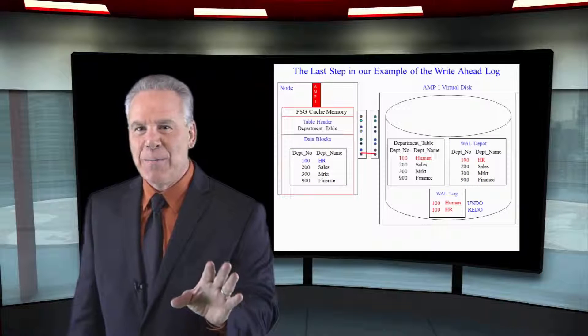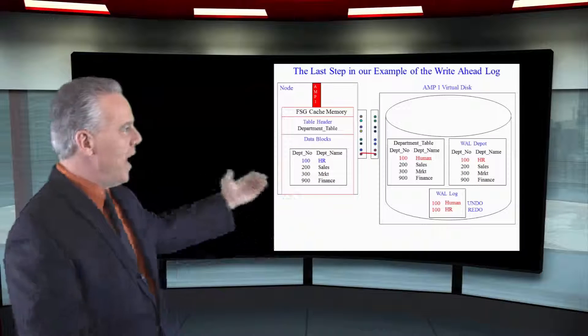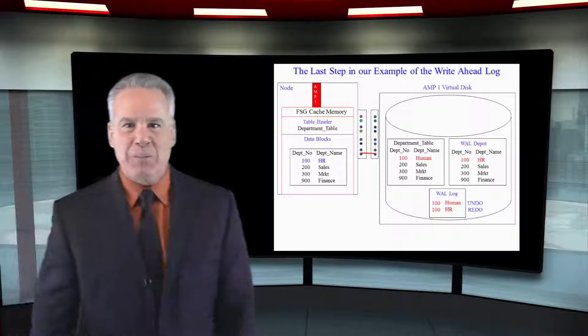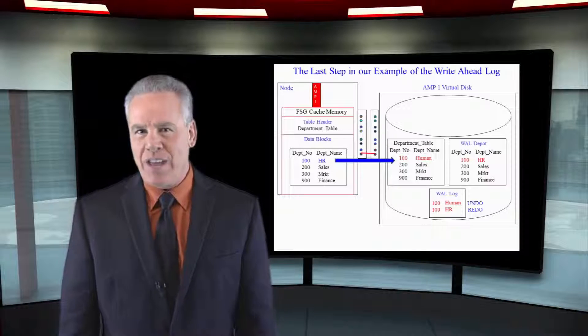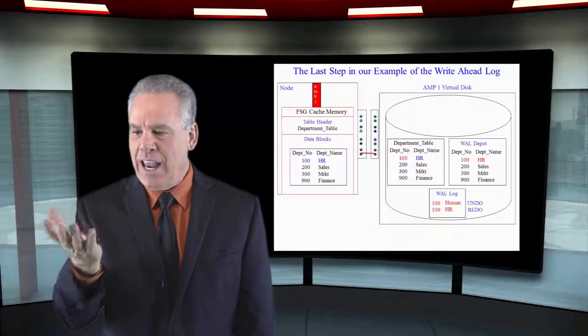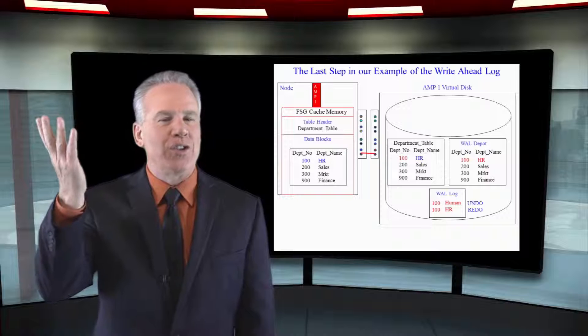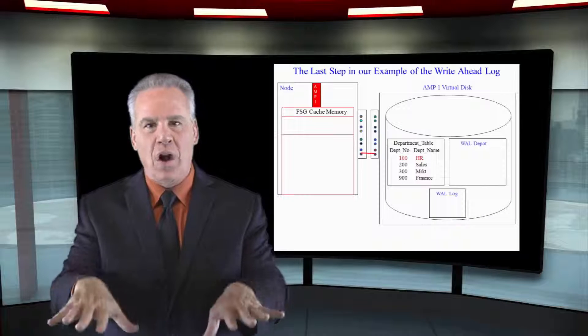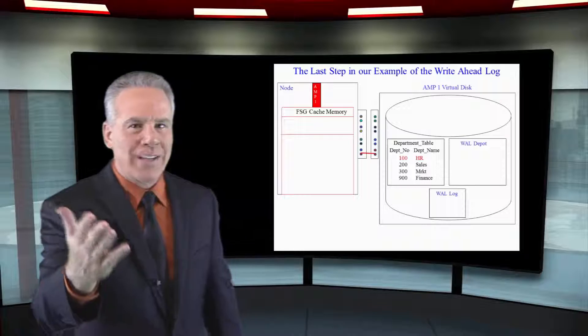The last step is to then do the actual write back to disk once everything's perfect and this row now says HR. The transaction's complete. The amp sends a message to the parsing engine over the binet and then the wall log and the wall depot are cleaned.